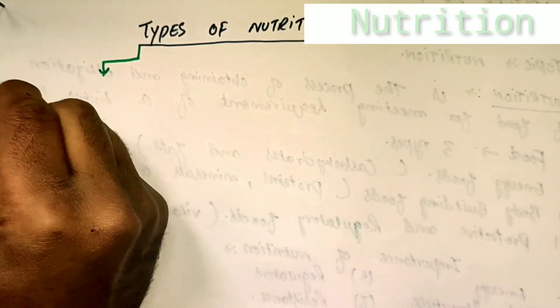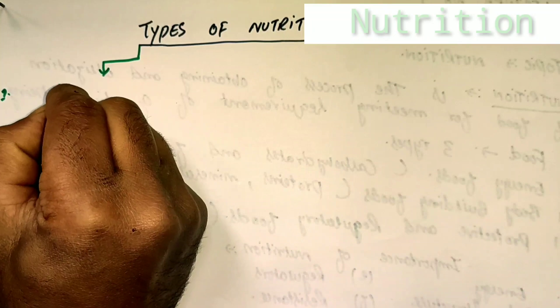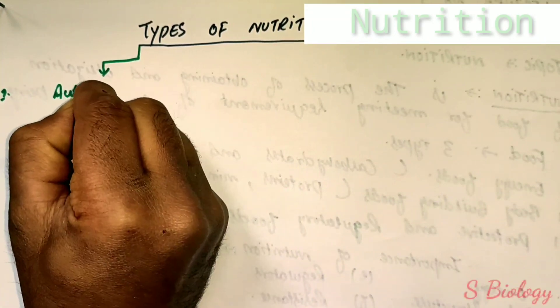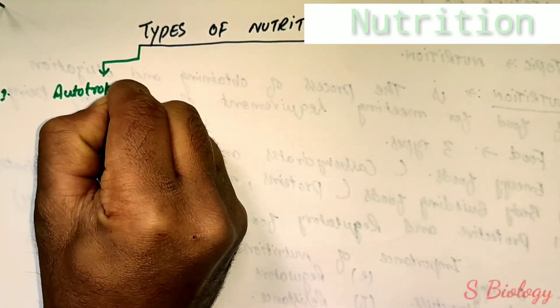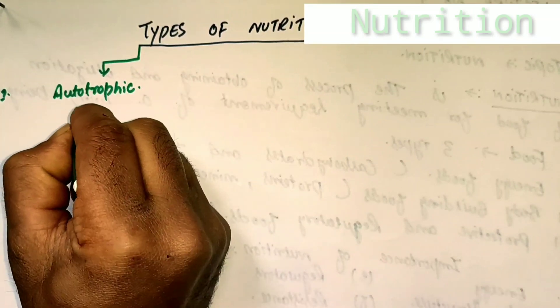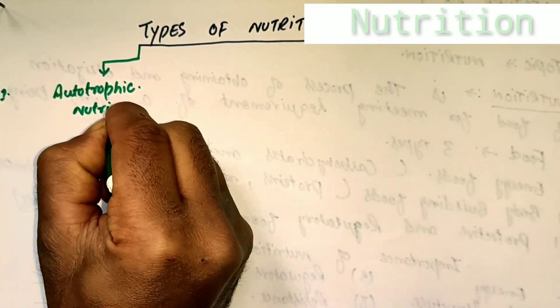Now, the types of nutrition. There are mainly two types of nutrition: autotrophic nutrition and heterotrophic nutrition.